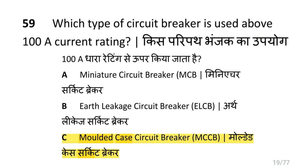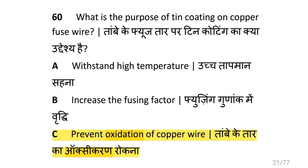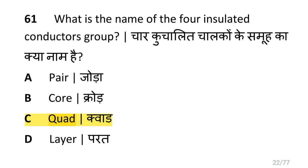Which type of circuit breaker is used above 100A current rating? That is molded case circuit breaker, that is MCCB. What is the purpose of thin coating on copper fuse wire? That is to prevent oxidation of copper wire. What is the name of the 4 insulated conductors group? That is quad.